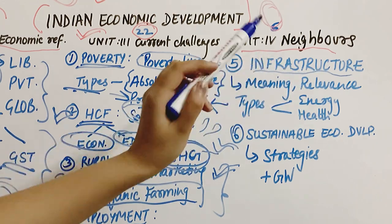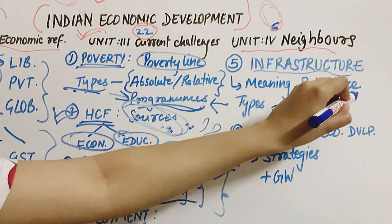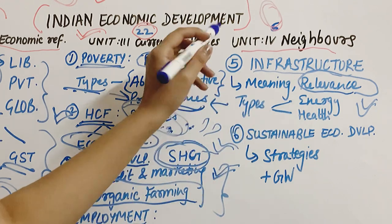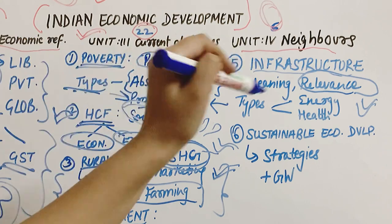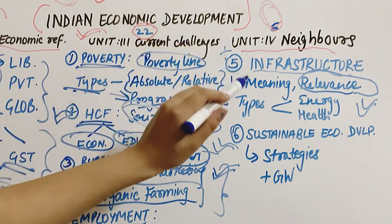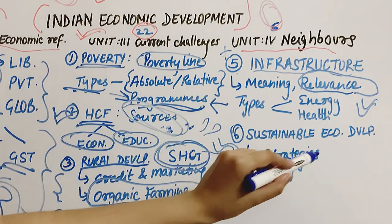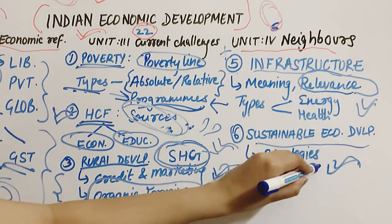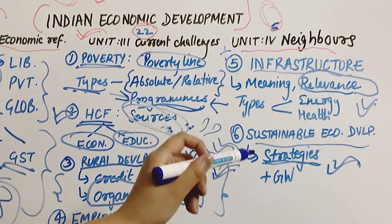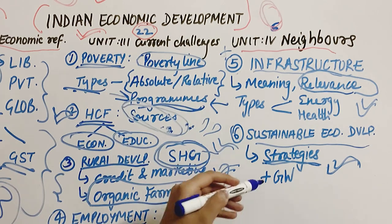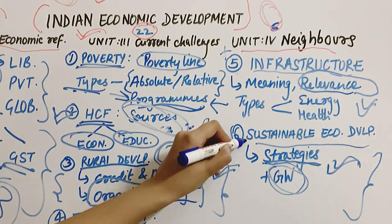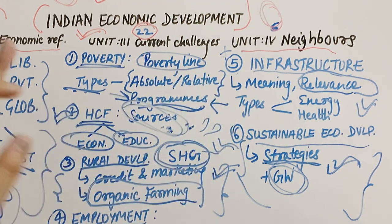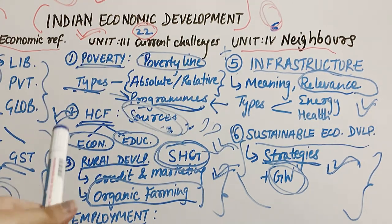The fifth chapter is Infrastructure. The most important topics are meaning and relevance — memorize the relevance — and types of infrastructure, just do a reading of that. This chapter doesn't require very in-depth study; just read it and don't waste too much time on it. The last chapter of Unit 3 is Sustainable Economic Development. We will study strategies to tackle sustainable development and global warming — these two topics by heart. This covers everything about Unit 3 and units 1, 2, and 3.